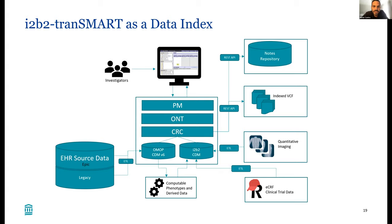We also have two different data sources where we use the CRC's functionality to query REST APIs. One of those is the notes repository — a huge repository of 220 million notes at Mass General Brigham — and the user can query and search through those notes, searching the text, interfaced through an API. Similarly, we have VCF files — genomic variant data — which are indexed and set behind an API, and we can query that API as part of a combined query.